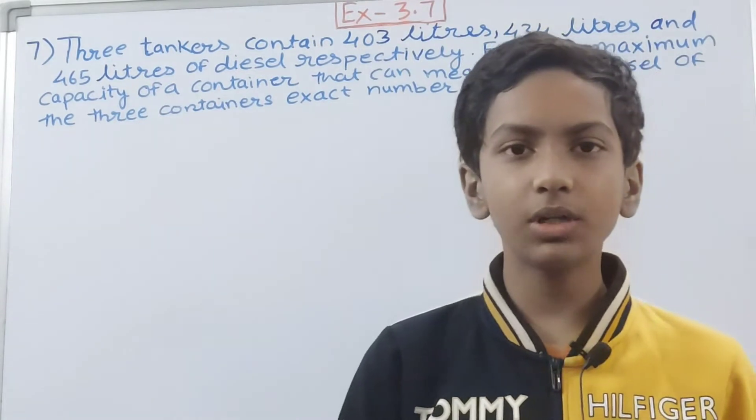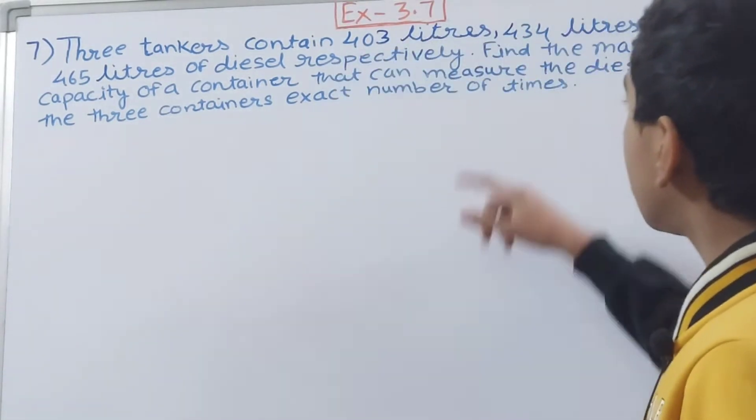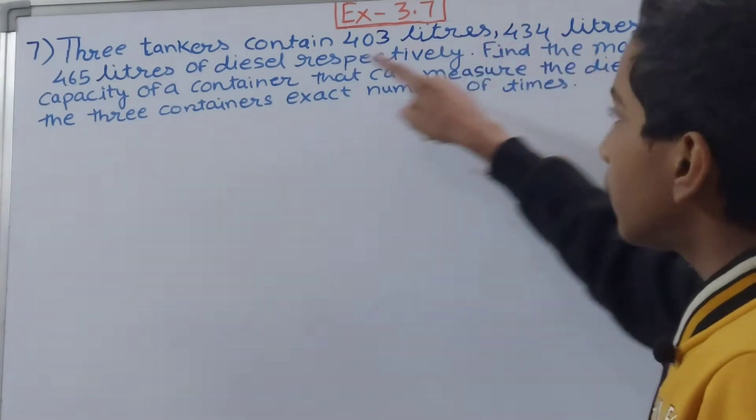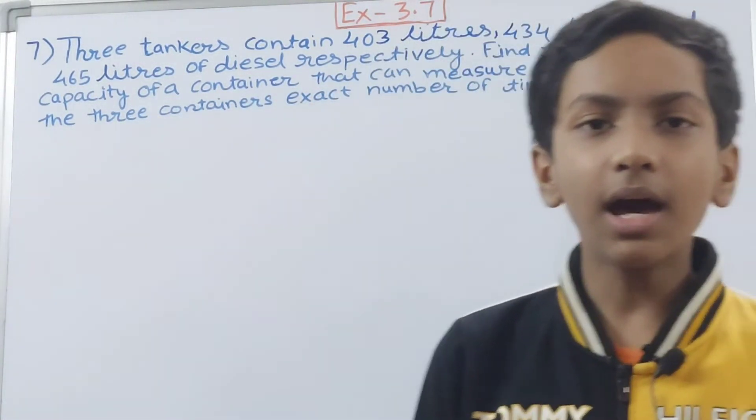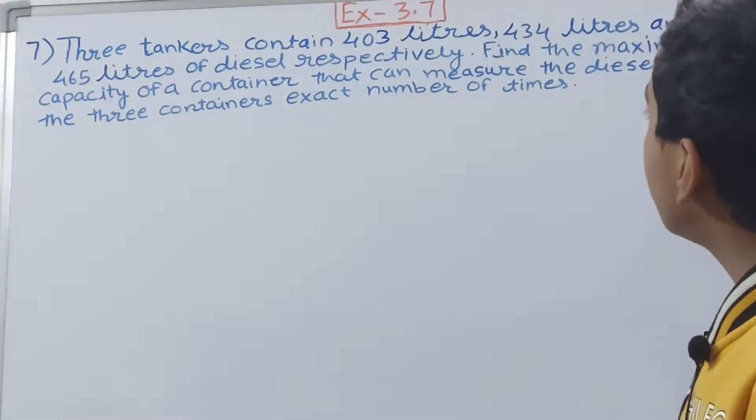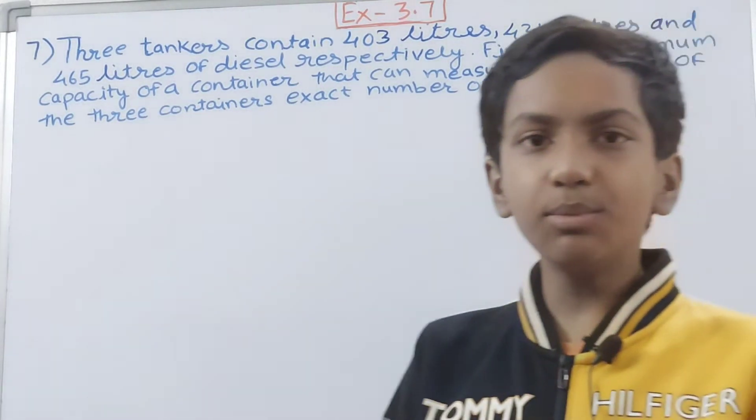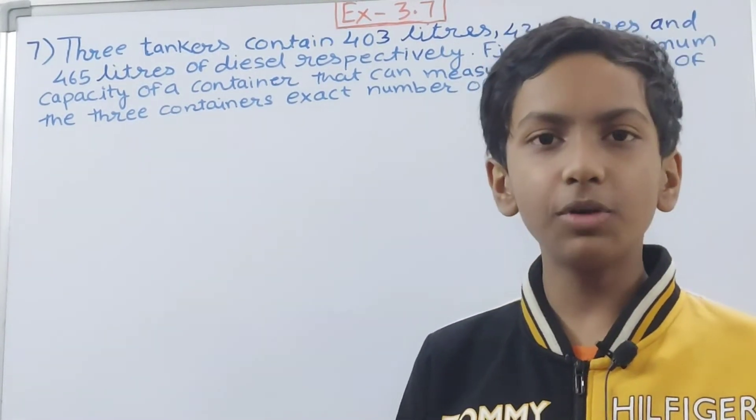Here three containers are given to us, and each of their capacity is 403 liter, 434 and 465 liters. Now we have to find the maximum capacity of a container. We have to take a container of the maximum capacity.